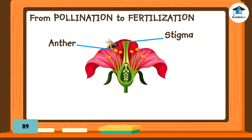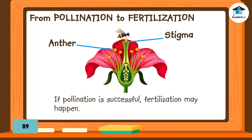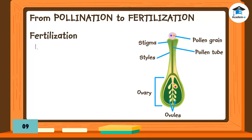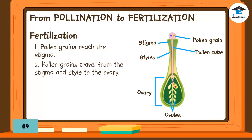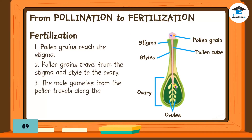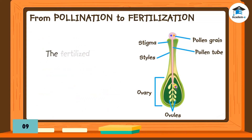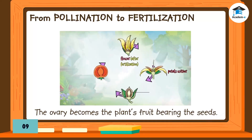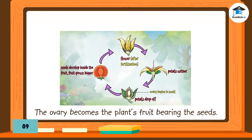From pollination to fertilization: The transfer of pollen grains from the anther of a stamen (male part) to the stigma of a pistil (female part) is called pollination. If pollination is successful, fertilization may happen. Fertilization starts when pollen grains that reach the stigma extend a pollen tube that travels from the stigma and style to the ovary. The male gametes travel through the pollen tube to fertilize the ovules. Fertilized ovules become the plant's seeds, and the ovary becomes the plant's fruit.